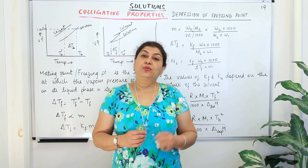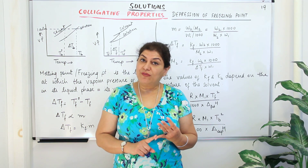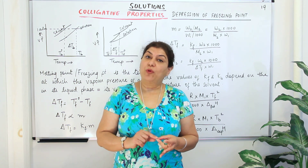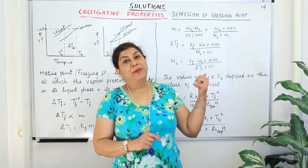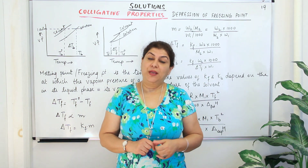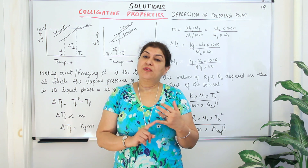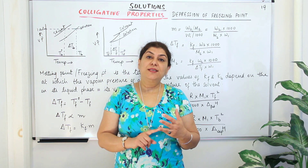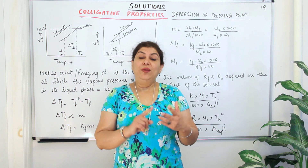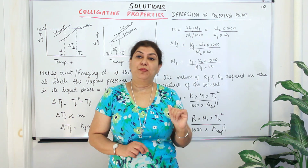There are four colligative properties. The first is relative lowering of vapor pressure. The second is the elevation in boiling point. Third is depression in freezing point, and the fourth is osmotic pressure. I've discussed the first two — relative lowering of vapor pressure and the elevation of boiling point. We now come to the third colligative property, that is the depression in freezing point.